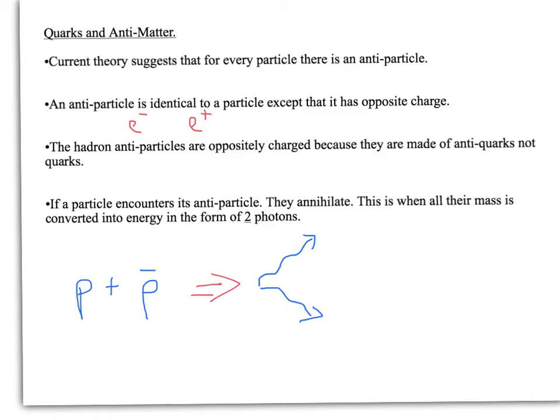If, say, for instance, the particles going in had slight to the right momentum, it can be slightly different. The key thing is, they form two photons when they annihilate. So let's move on to have a look at some quarks.